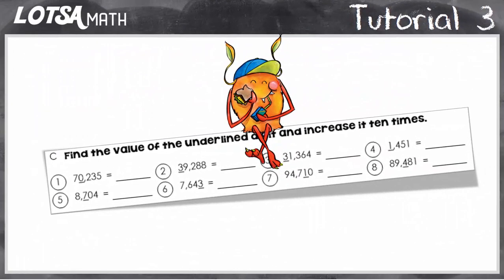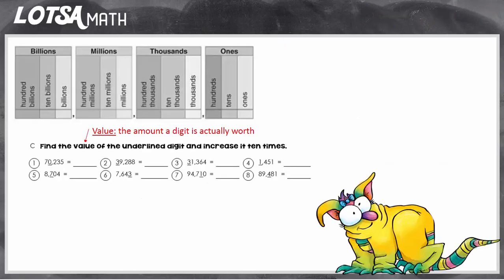For these types of problems, you have to find the value of the underlined digit and increase it ten times. So let's think about what that's actually asking us to do. We have to find the value — the value is just the amount a digit is actually worth. Remember, a digit is just a single number, zero through nine, that represents a value.